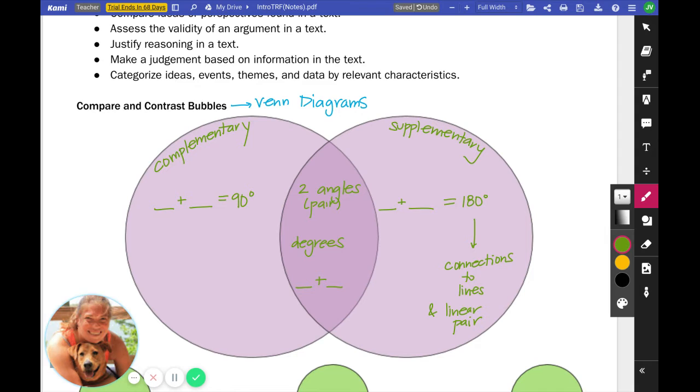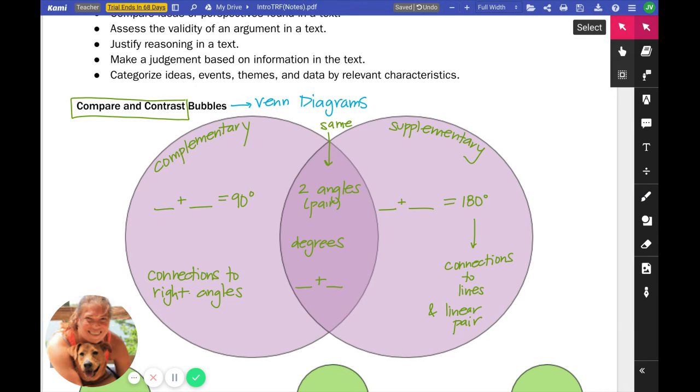But that is in the supplementary side because it doesn't fit in the complementary side. But now I'm going to take what I know about complementary. Well, I've got some connections to right angles. So remember that this is what they have the same, but then we keep their uniqueness in their own bubble. So compare and contrast, so great for when you have two things and you're trying to find out what's the same, what's different, so that I can compare and contrast things. As soon as you see compare and contrast, let's get after it. Let's get into that Venn diagram and just go.